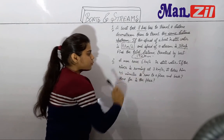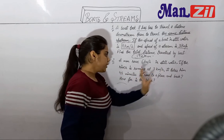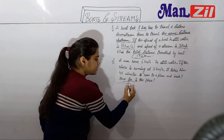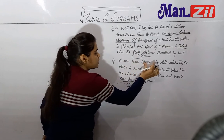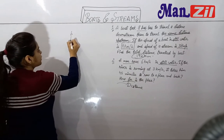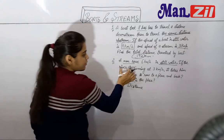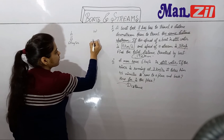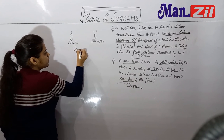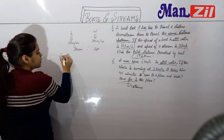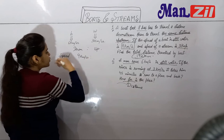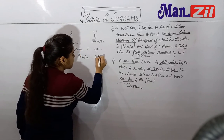Now let's move to the next question. The river is running at 3 km per hour — that means we are given W, the water's rate, which is 3 km per hour. We need to find the downstream speed and upstream speed. Downstream speed is B plus W, that is 6 plus 3 equals 9 km per hour. And upstream speed is B minus W, that is 6 minus 3 equals 3 km per hour.